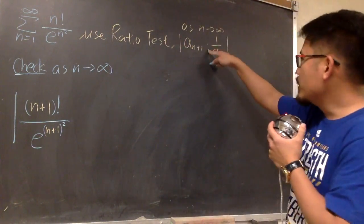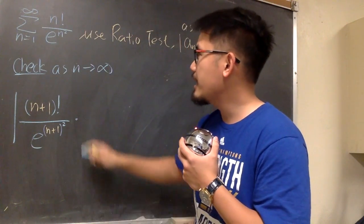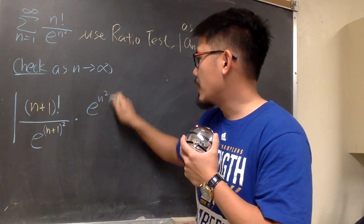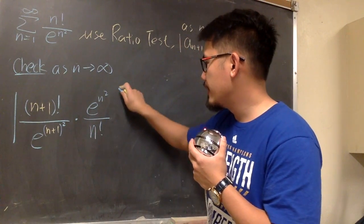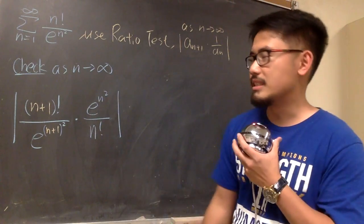Alright, and then we multiply by 1 over a_n, which is just the reciprocal of this. So, we multiply by e to the n squared power over n factorial on the bottom, like this. So, this is the setup, and now, here is the simplification.